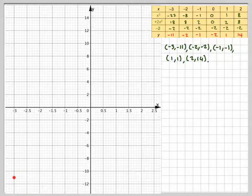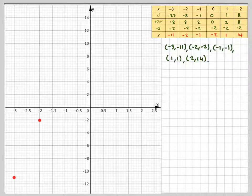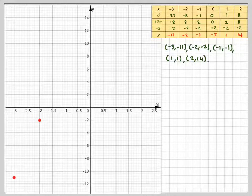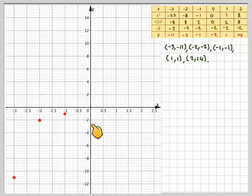There. And then minus 2, minus 2 will be there. And then minus 1, minus 1 will be halfway between the two. So accurate plotting is required. 0, minus 2 is there.